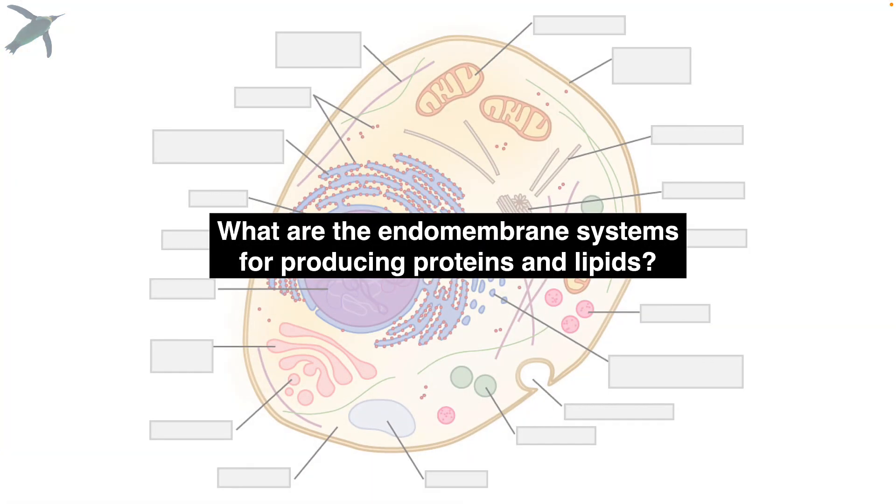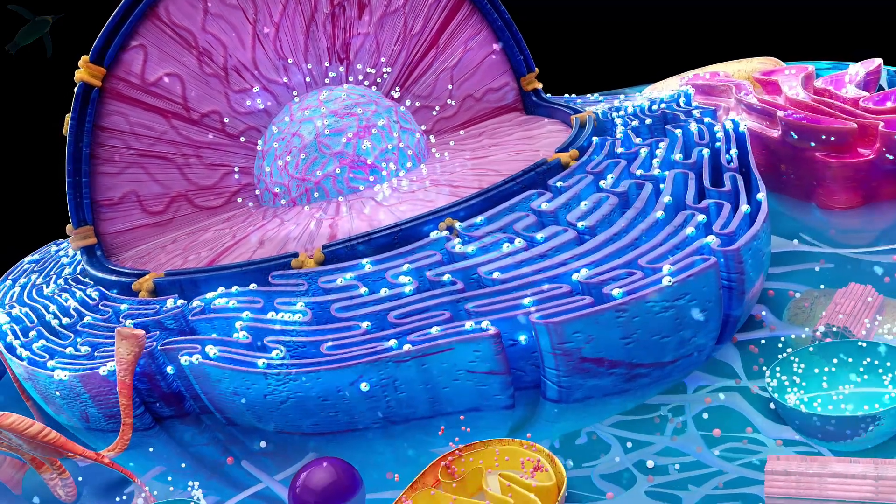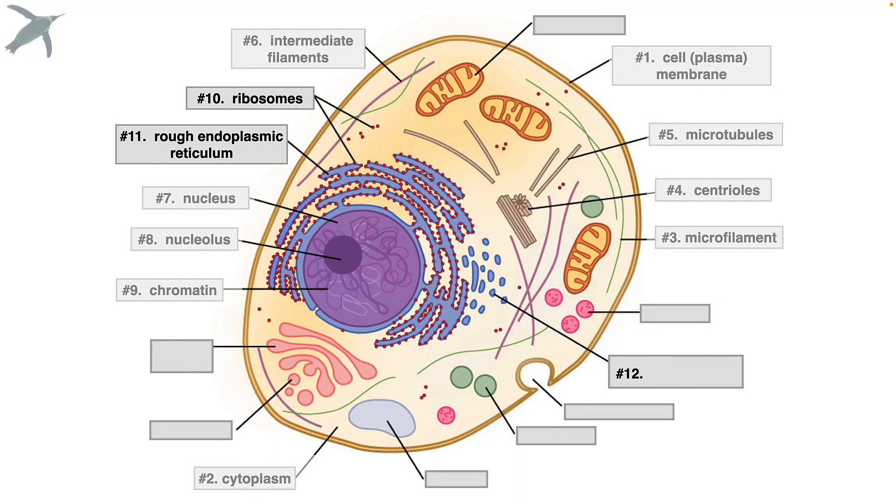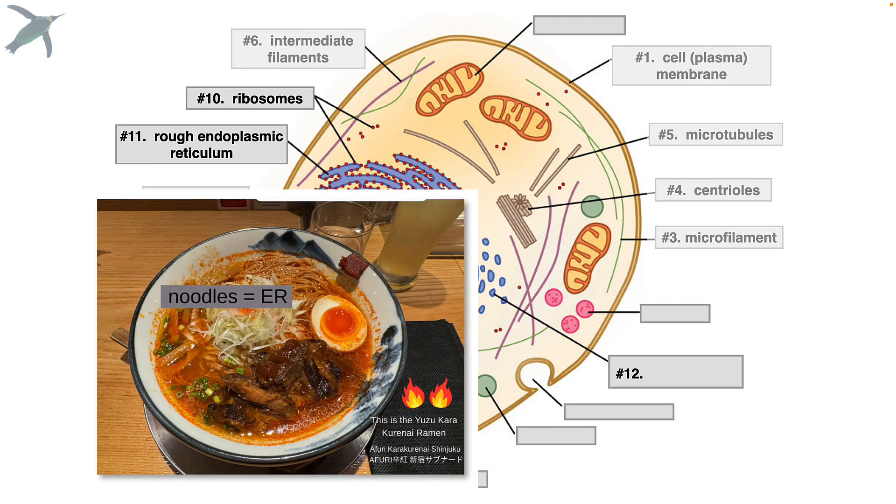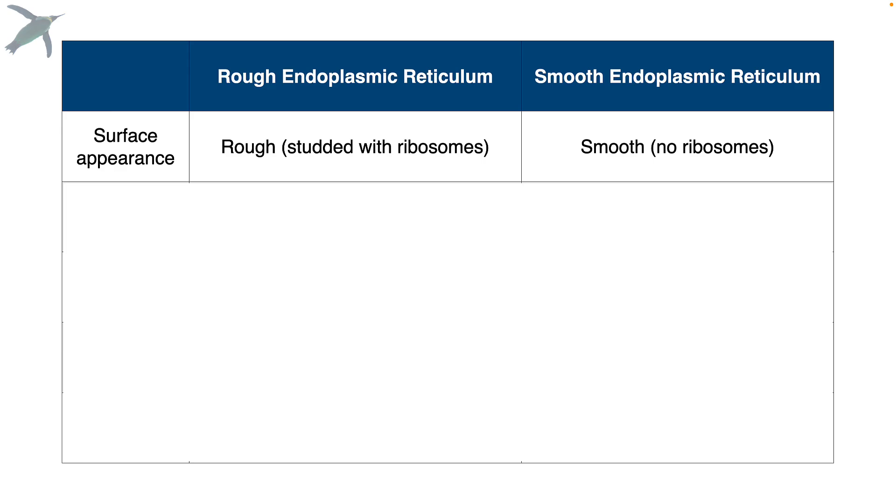Now, we have what are called endomembrane systems. That just means membranes inside, where proteins and lipids are going to be made. Number 11 are the membranes that are studded with ribosomes. Do you know what those are called? Those are rough endoplasmic reticulum. It's a long word, I know. Number 12, these are membranes that look more like tubes rather than stacks of membranes, and they don't have ribosomes. So we call those smooth endoplasmic reticulum. Now, you probably know the rough versus smooth is about ribosomes, but there's some other differences too.